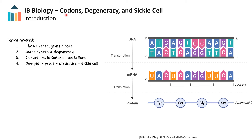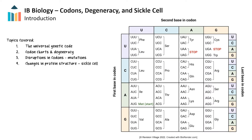This video is about codons, degeneracy, and sickle cell anemia. We first start out by exploring the universality of the genetic code and how it functions in living things. We look at how to use codon charts to determine the amino acids encoded by specific sequences of three nucleotide bases in messenger RNA, known as codons.